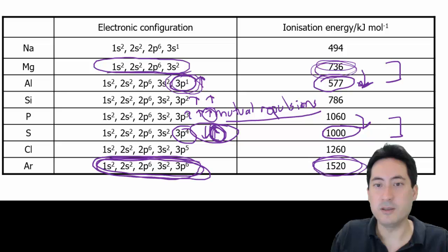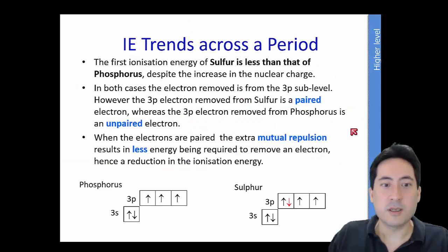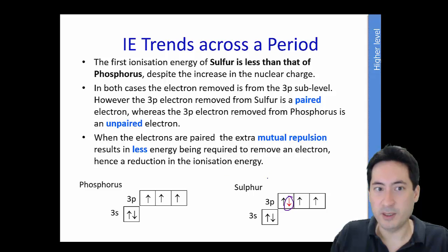So here we have a better explanation because of the diagrams here. So why is the ionisation of sulphur less than phosphorus? Because we're getting an increase in nuclear charge. Here is the explanation. The mutual repulsion of the paired electrons having the unpaired all complete is much more stable.